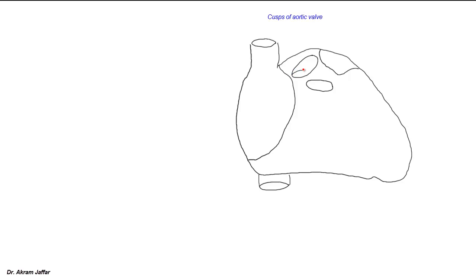One of these cusps is anterior, and there are two other posterior cusps — anatomically speaking. Behind each of these cusps is a sinus, and from two of these sinuses, coronary arteries arise.